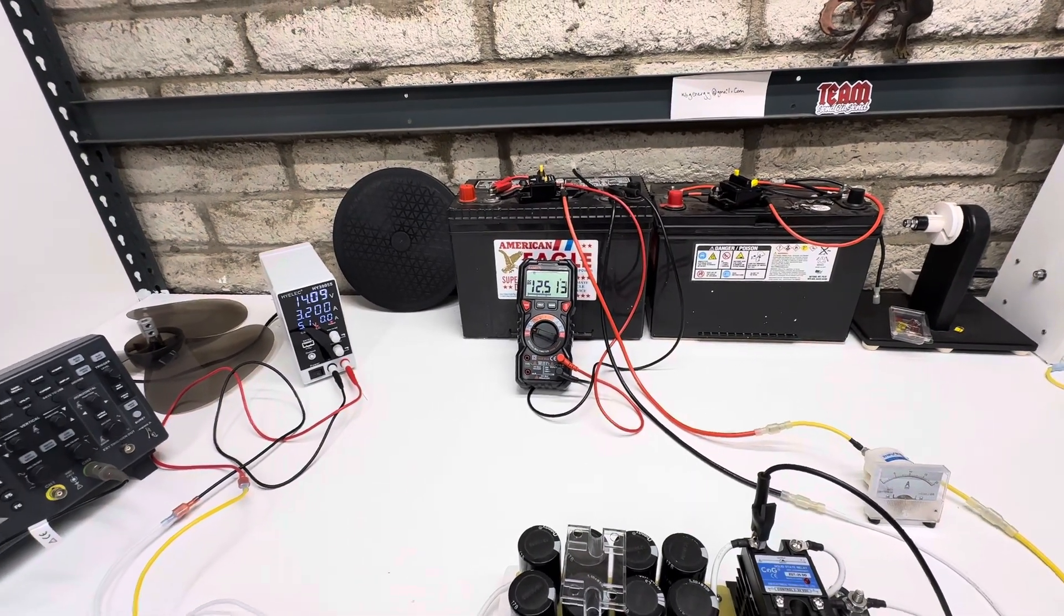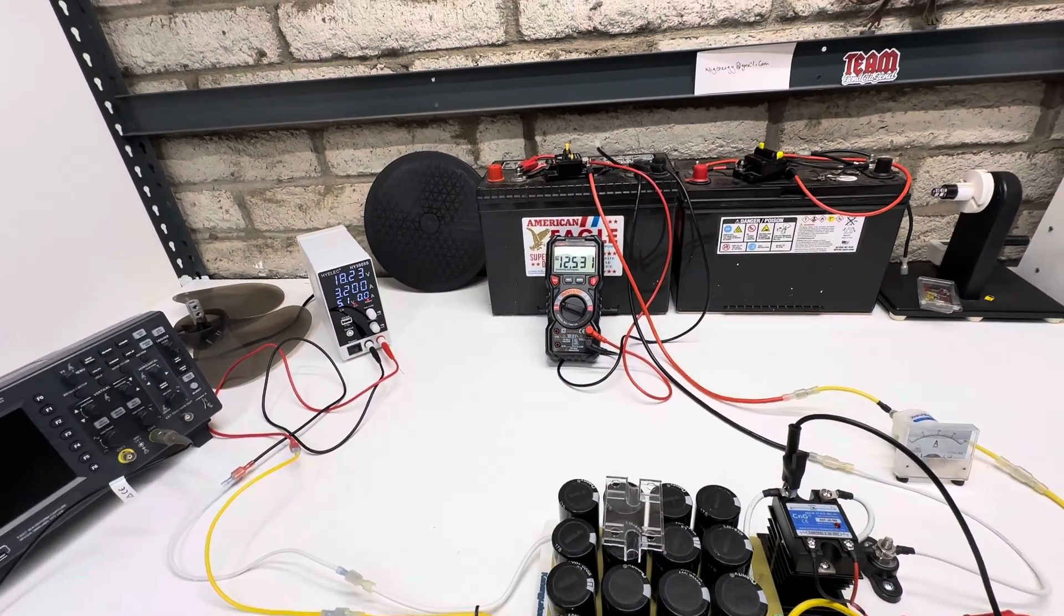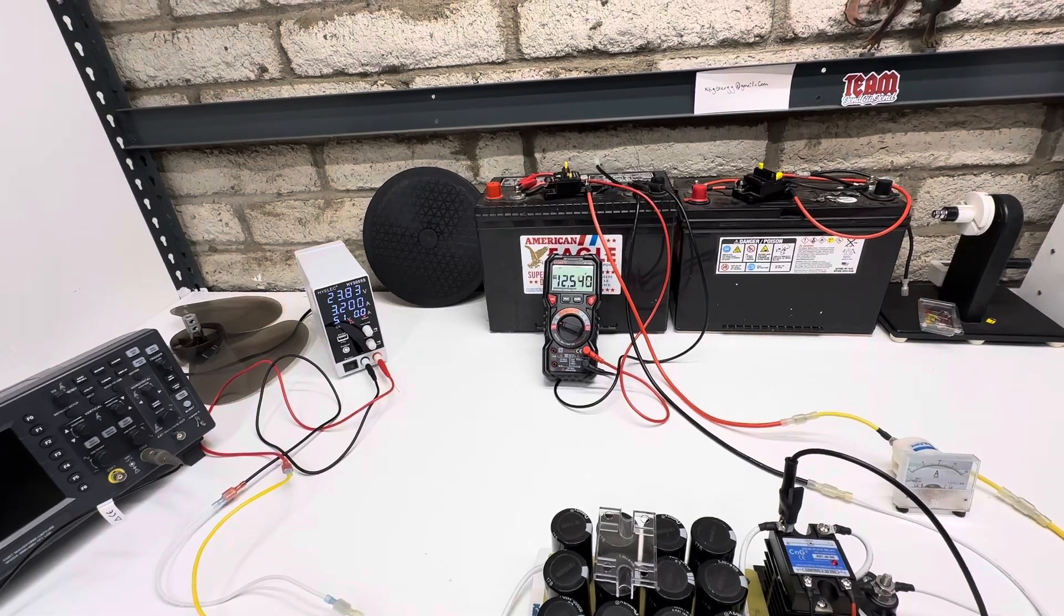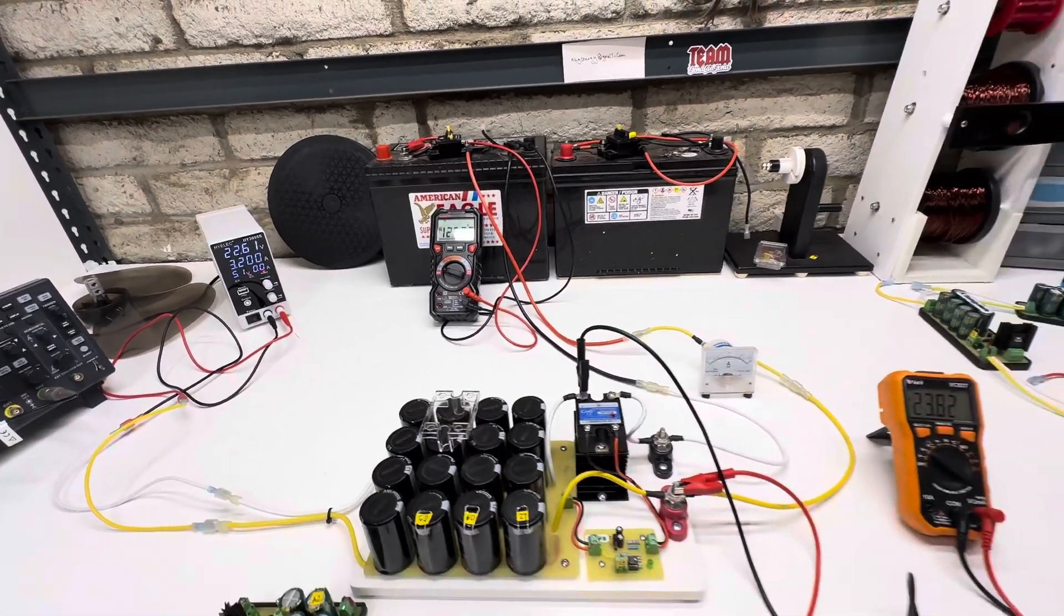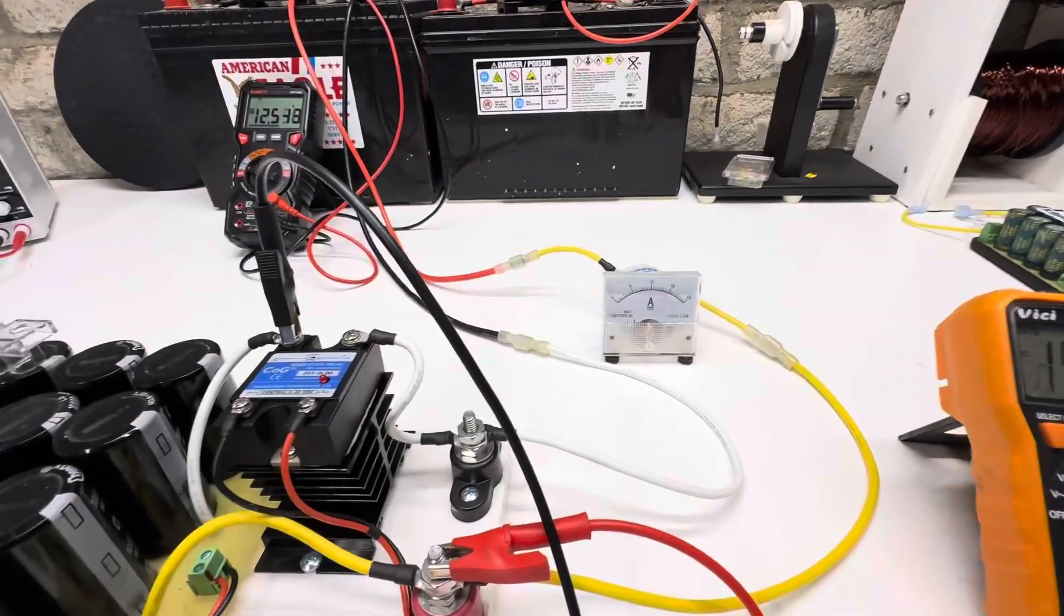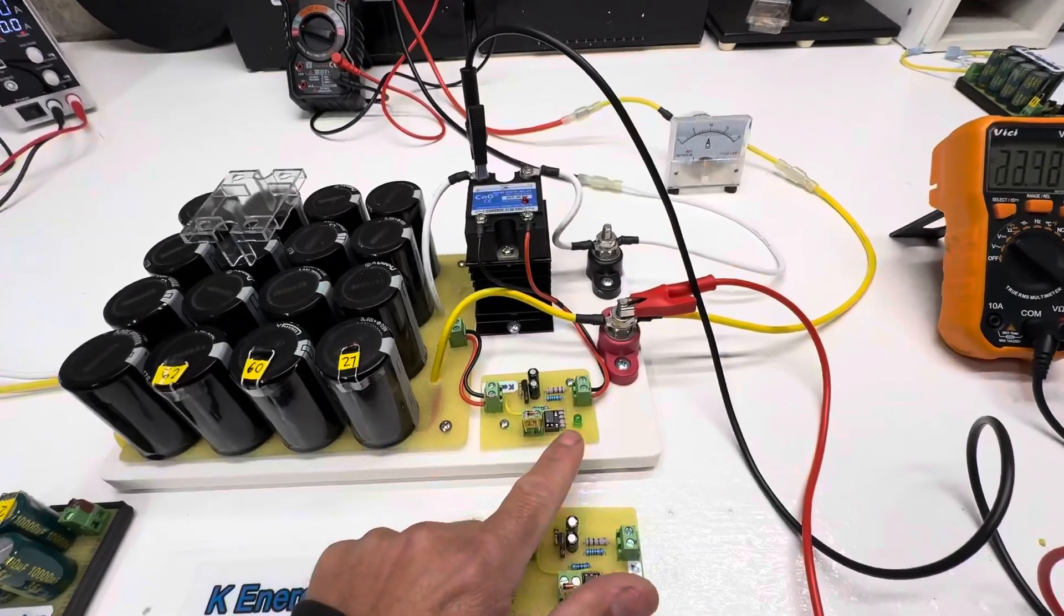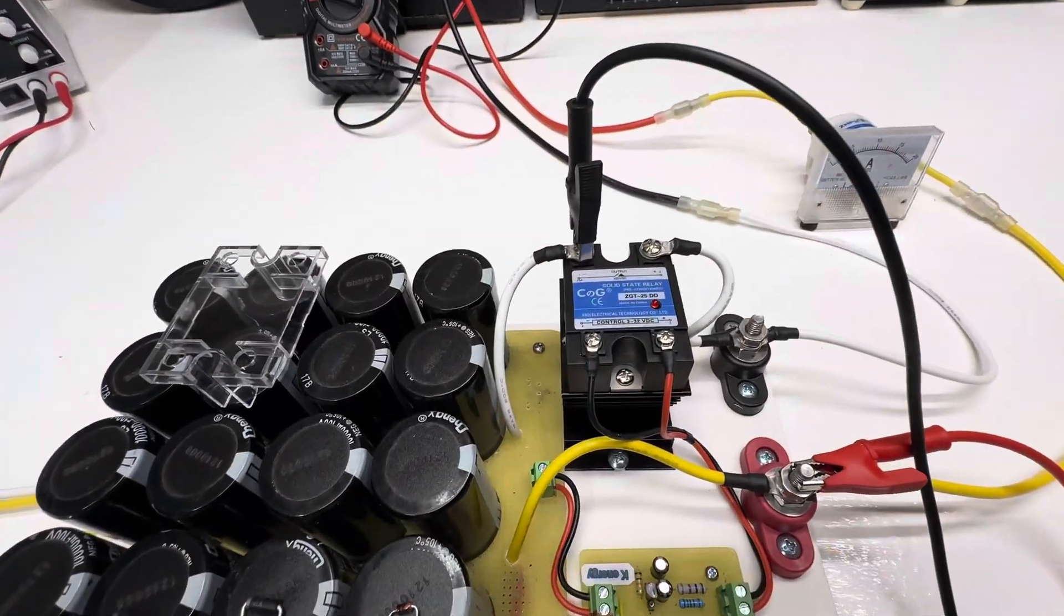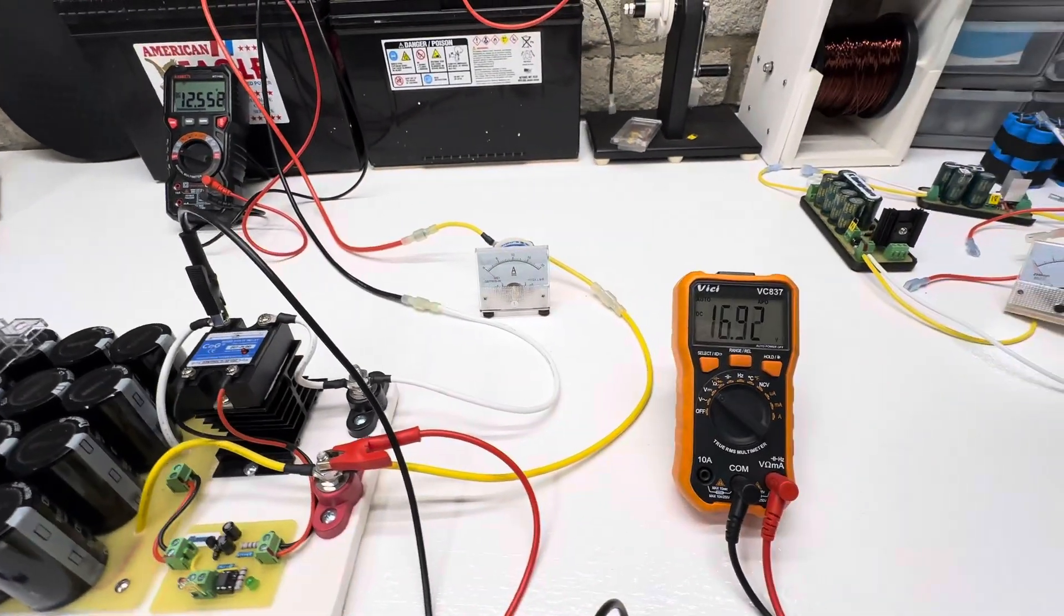So instead of just charging it like that, if you want to get a battery up to voltage and help desulfate the battery, this is a good way to do it. So it charges pretty quickly. I mean we are putting in a lot of amps and you can see the little circuit has a light and then the solid state relay does too.